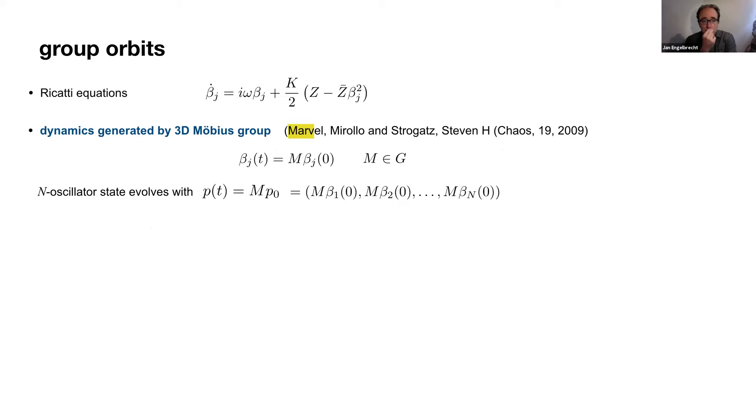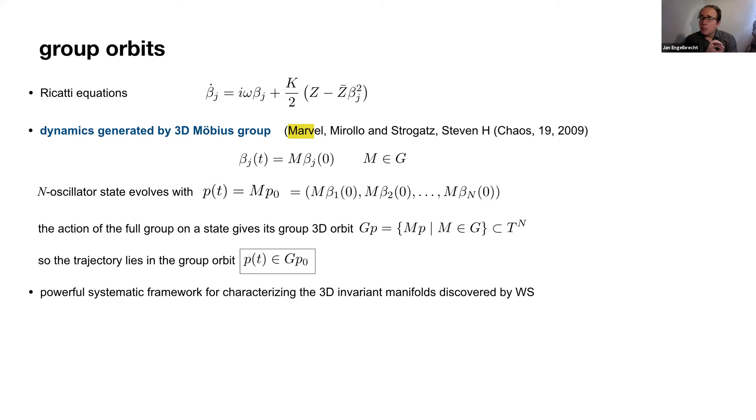If the same operator acts on all n oscillators, that generates a trajectory, p of t, which would be time dependent. That trajectory will lie in a space which we call the group orbit. The group orbit takes a representative state and then acts on it by all the operators of the group. And that 3D space, the group orbit, is very useful in analyzing this lower dimensional dynamics.